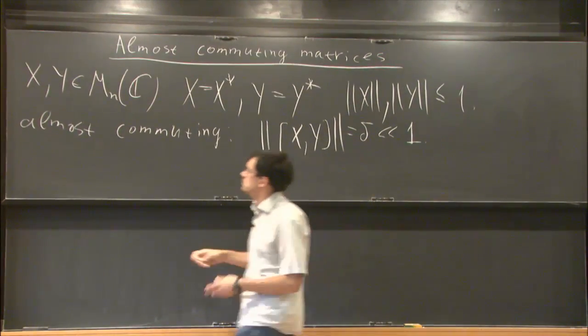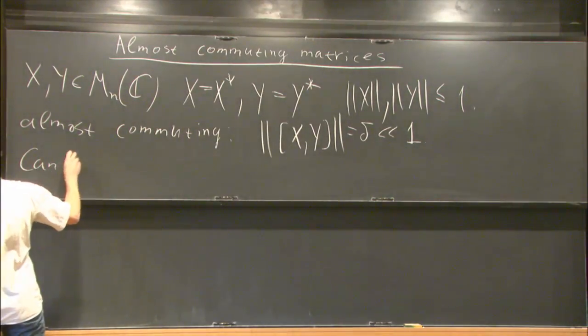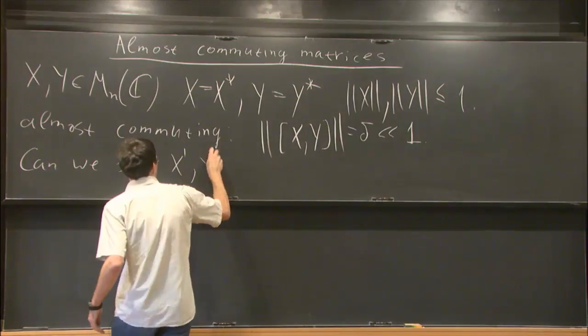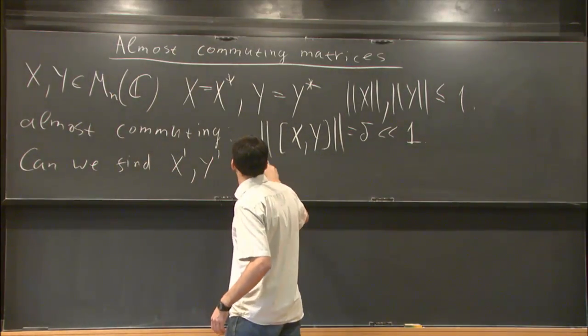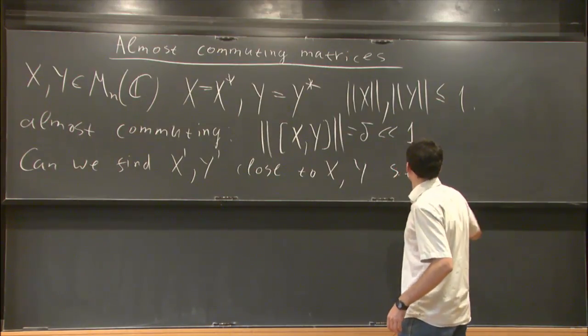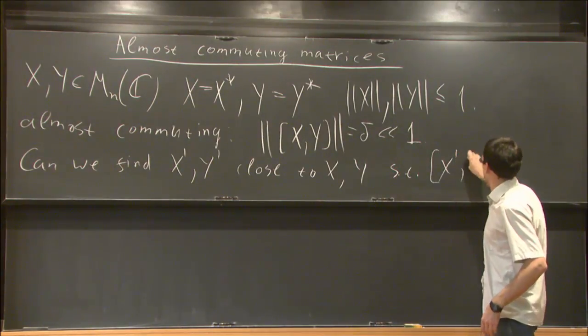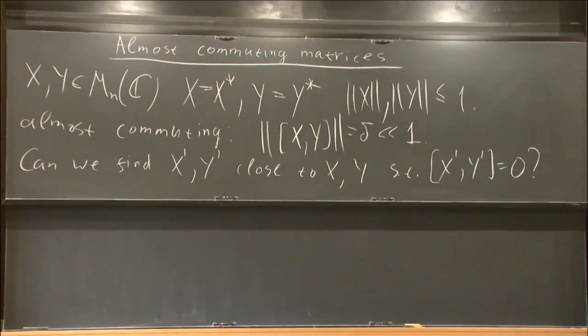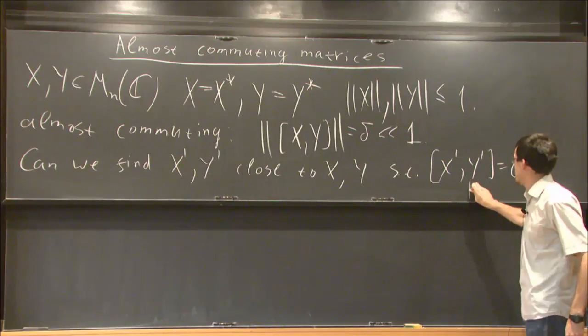Can we find X prime and Y prime close to X and Y such that they commute? This question is quite old, dating back to Paul Halmos, I think from the 1960s.